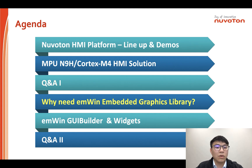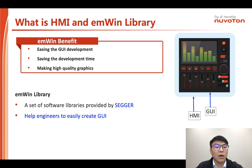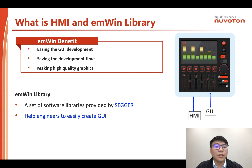Now we are going to discuss why you need the EMWIN embedded graphics library. HMI stands for Human Machine Interface — users interact with an LCD or OLED display, showing graphics through touch control. EMWIN library is a set of software tools, APIs, and libraries provided by SEGGER. EMWIN helps engineers easily create GUI and saves development time, ultimately improving the quality of the GUI.